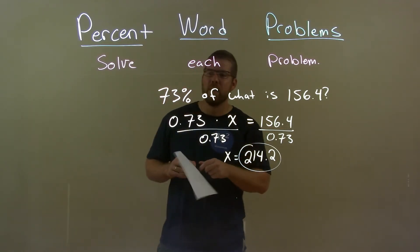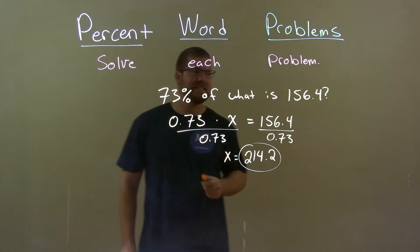Quick recap: we're given 73% of what is 156.4.